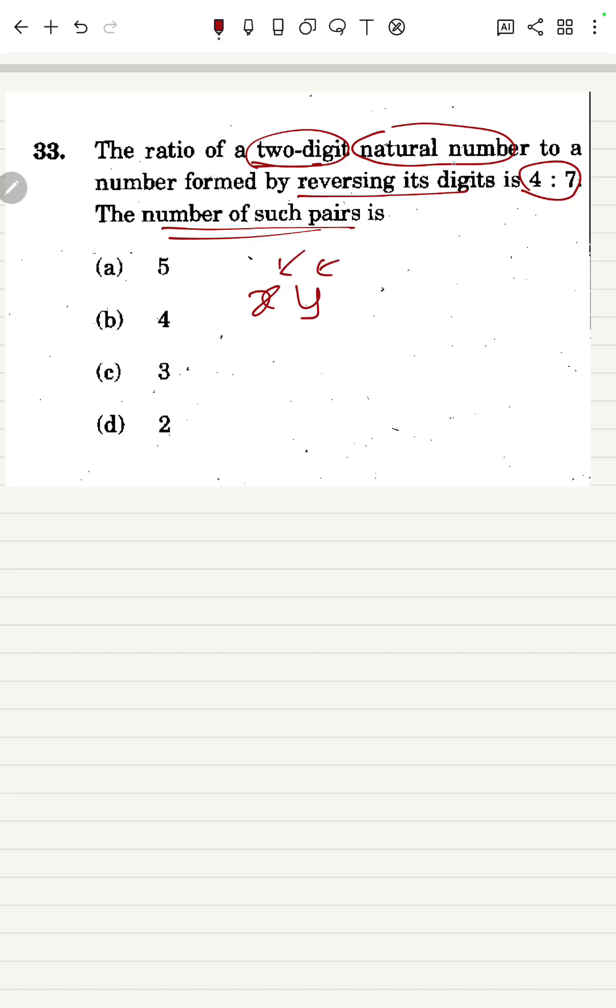So it is said that this is a two-digit number where X and Y are natural numbers. Natural numbers start from 1 onwards: 1, 2, 3, 4, 5, etc. So if XY is a two-digit number, this number can also be represented as 10 into X plus Y, right? So 10X plus Y—because we know this is units place, this is tens place.